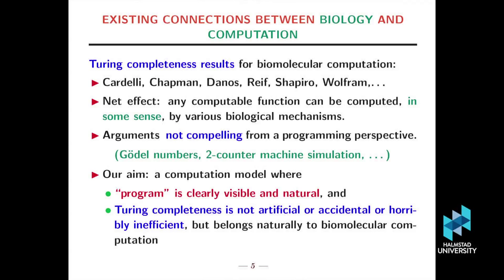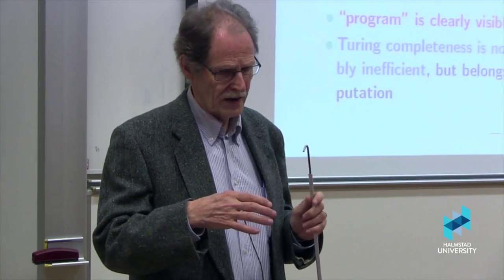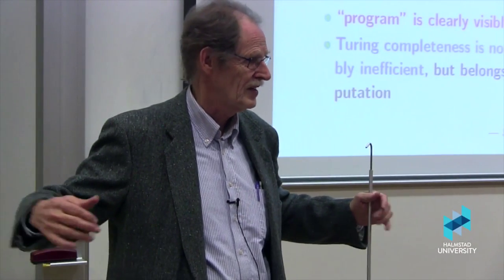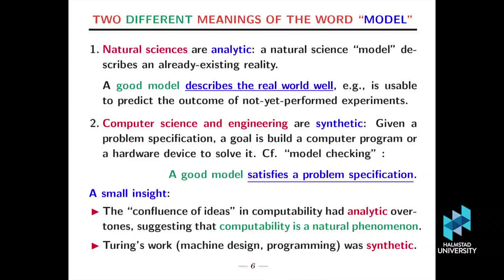The aim came from computation model where the program is clearly visible and natural, and the Turing completeness is a natural thing that comes out of this. You could argue that any biological structure is finite, and therefore they can't be Turing-complete. But I'm imagining computation happening in some kind of biological soup, which is a technical word that they actually use, which is expandable by need. The second problem is this term model, which has always bothered me, that there's two very different meanings of modeling.